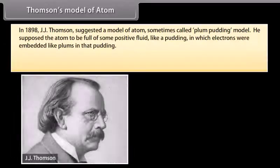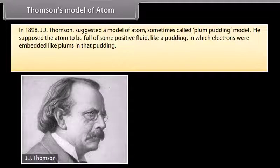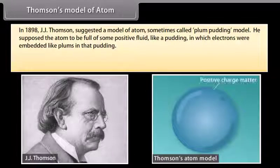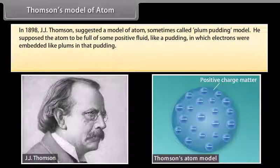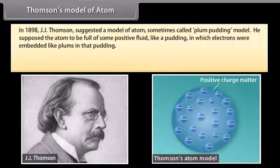In 1898, J.J. Thomson suggested a model of the atom, sometimes called the plum pudding model. He supposed the atom to be full of some positive fluid, like a pudding, in which electrons were embedded like plums in that pudding.